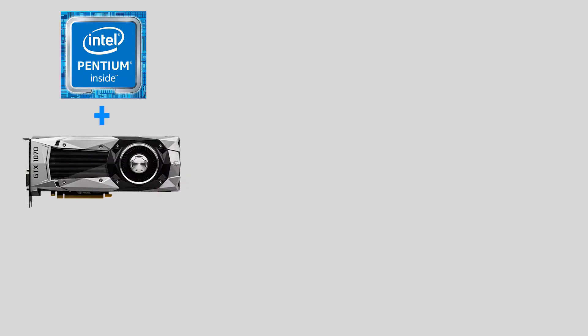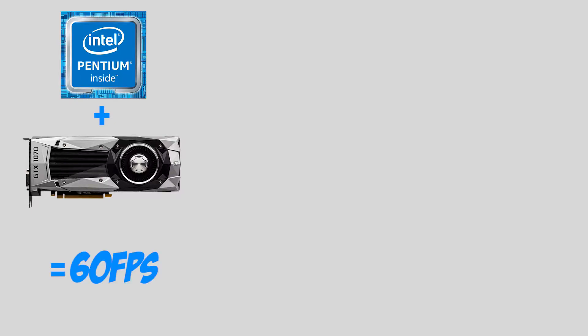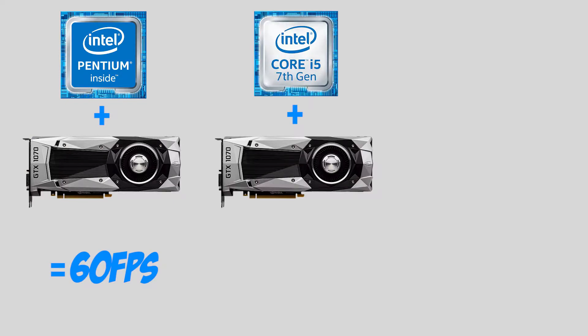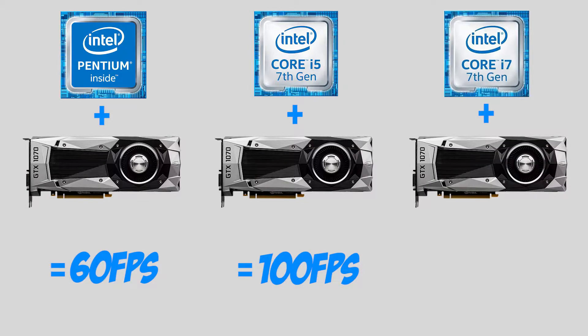Bottlenecking primarily has something to do with your CPU and your GPU. For example, if you have a dual-core Pentium processor and your graphics card is a GTX 1070, that would cause a bottleneck because your CPU can't output all the frames your GPU is putting out. To simplify it, your dual-core Pentium can only process 60 frames from the GTX 1070, while an i5 quad-core processor can process and output 100 frames. This doesn't necessarily mean the bottleneck is completely gone, because an i7 may be able to get 120 frames from a 1070.